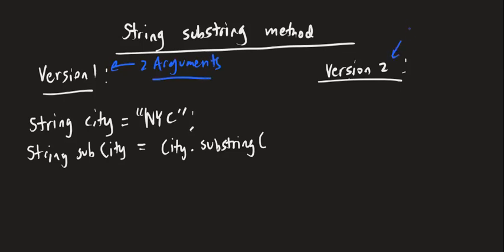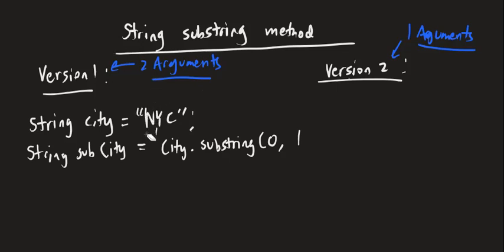I'll explain the arguments with examples to make it concrete. So with city.substring(), say I want only 'n' and 'y'. In programming we start at index zero, so our first argument is zero. Now here's where people get confused: you might think the second argument is one since 'y' is at index one, but if we do that we only get 'n'. The reason is that the second argument is exclusive — we go from zero up to but not including that index. So we need zero to two to get 'n' and 'y'.